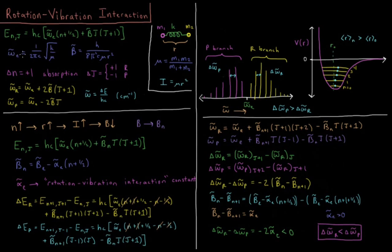Omega e is the vibrational constant, which is 1 over 2 pi c square root of spring constant divided by reduced mass. B-bar, the rotational constant, is equal to Planck's constant divided by 8 pi squared speed of light times reduced mass times bond length squared.